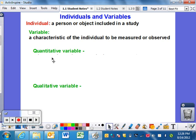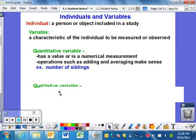There are two different types of variables. The first is quantitative, which involves numerical values and numerical measures. Operations such as adding and averaging make sense. That's why it's quantitative - like the number of siblings you have.